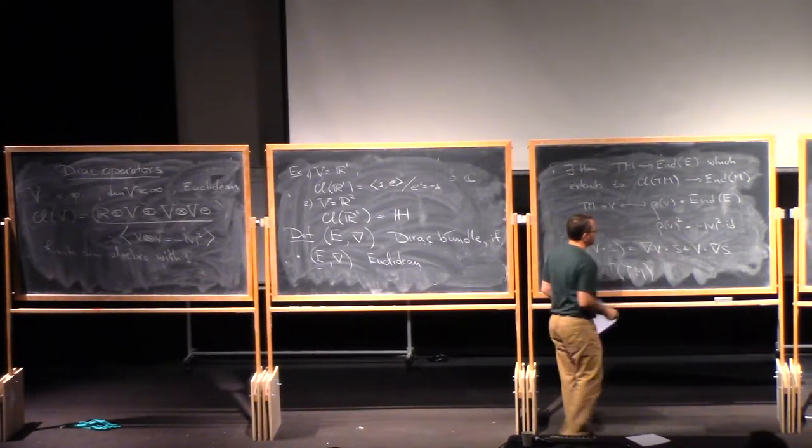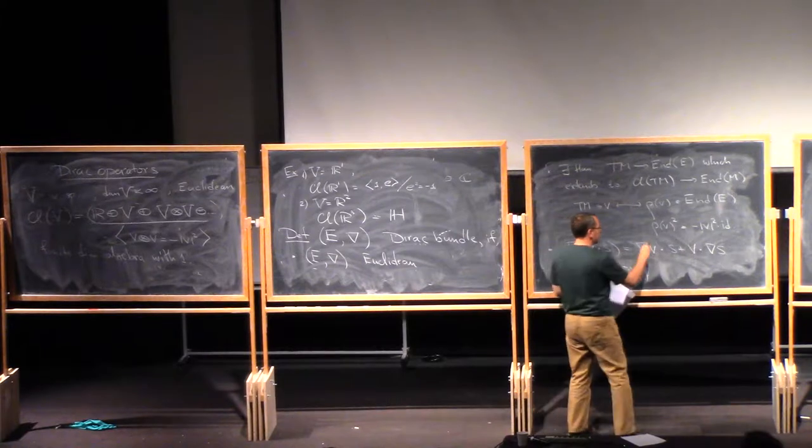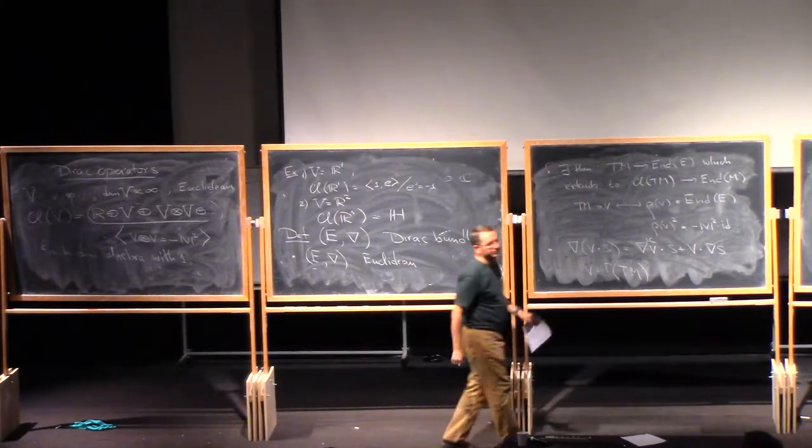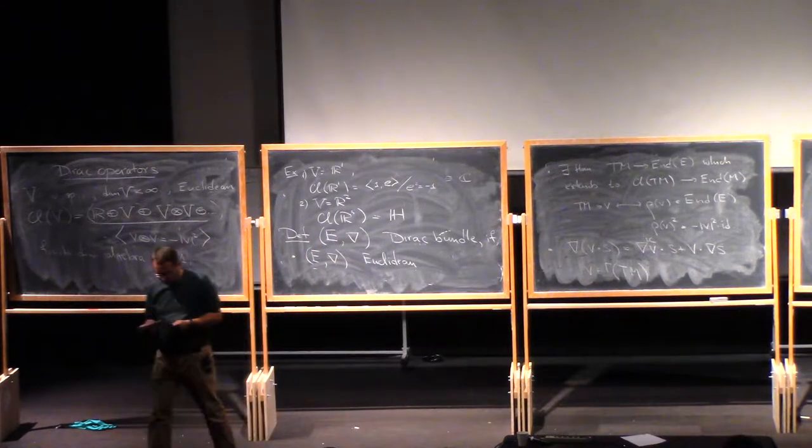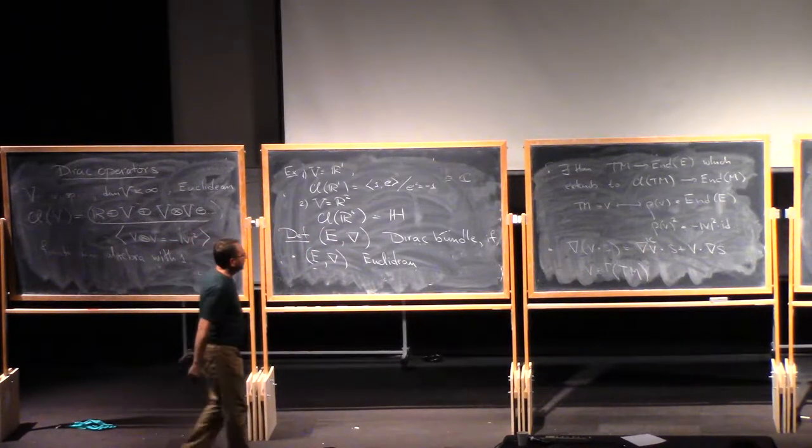And NABLA of V denotes the Levi-Civita connection, if you wish, this is the Levi-Civita connection, applied to V.